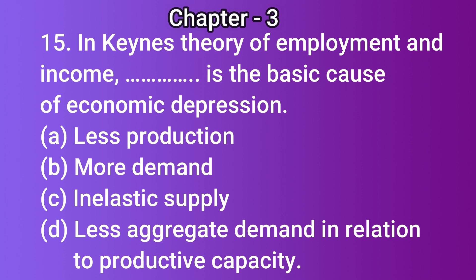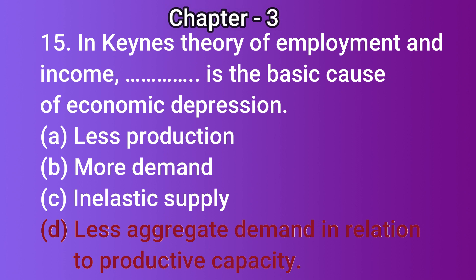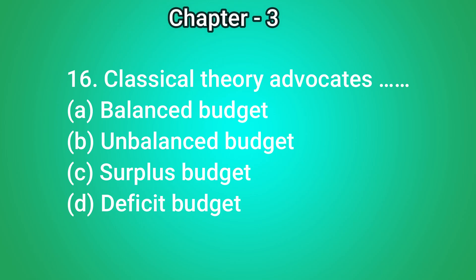...of economic depression — (a) less production, (b) more demand, (c) inelastic supply, (d) less aggregate demand in relation to productive capacity. The correct answer is (d) less aggregate demand in relation to productive capacity. Question number 16: classical theory advocates — (a) balanced budget, (b) unbalanced budget, (c) surplus budget, (d) deficit budget. The correct answer is (a) balanced budget.